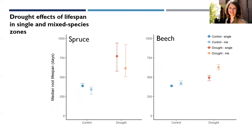To estimate fine root lifespans, I used Cox proportional hazard models and Kaplan-Meier estimates. We found that for median lifespan, drought increased fine root lifespan for both spruce and beech in both the mixed and single species zones — in line with my hypothesis.